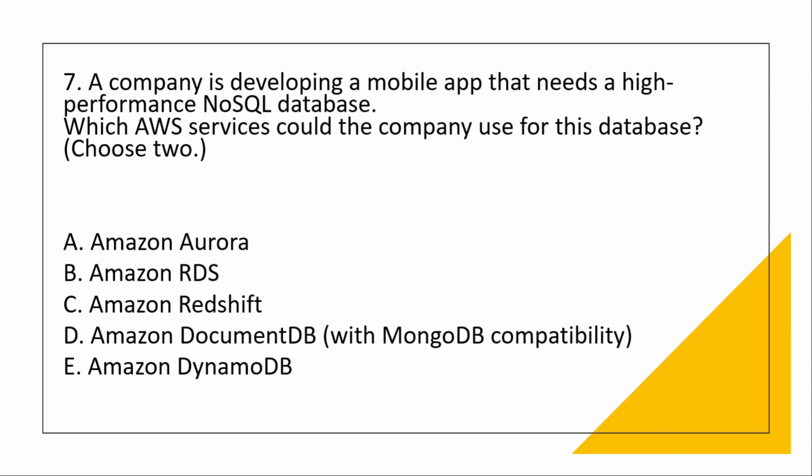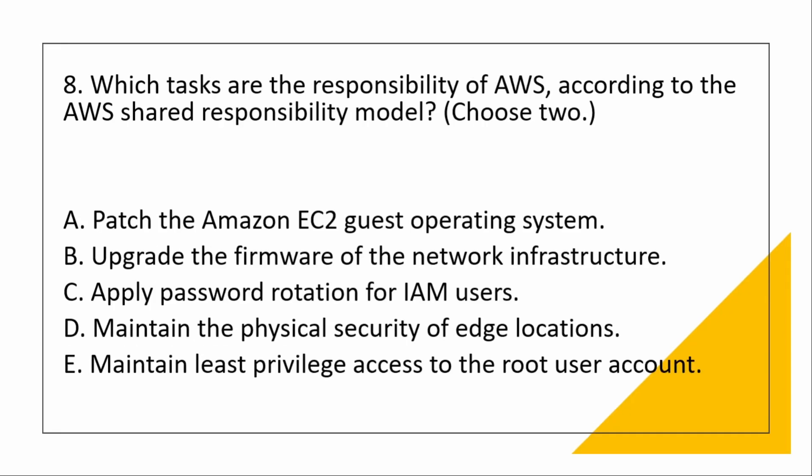A company is developing a mobile app that needs a high-performance NoSQL database. Aurora and RDS are not NoSQL databases. Redshift is a data warehouse. That leaves DocumentDB and DynamoDB, both of which are NoSQL databases.